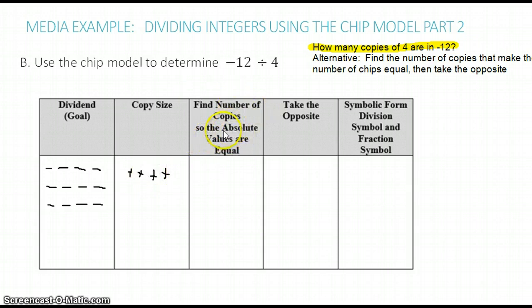So now let's find the number of copies that makes these two amounts of CHIPs equal, or their absolute values. So I am making one copy of 4, two copies of 4, and three copies of 4. Let me just highlight the first copy, second copy, third copy. So this is three copies.